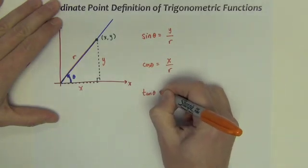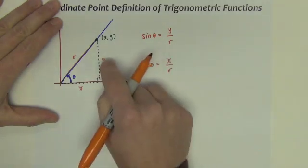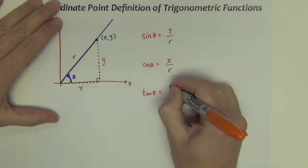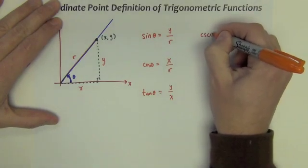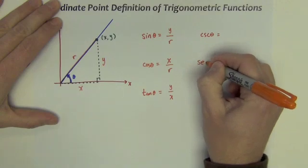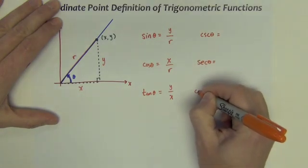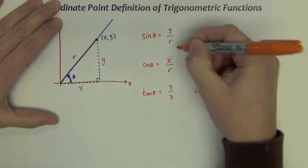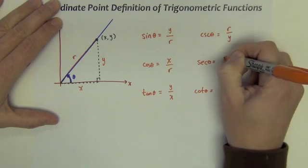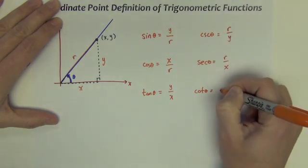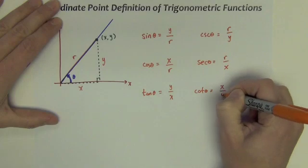And the tangent, instead of opposite over adjacent, can be y over x. Cosecant, secant, and cotangent are just the reciprocals. So r over y, r over x, x over y.